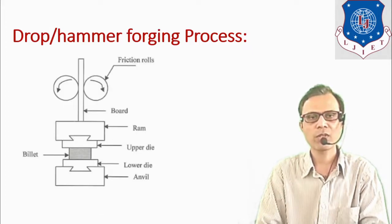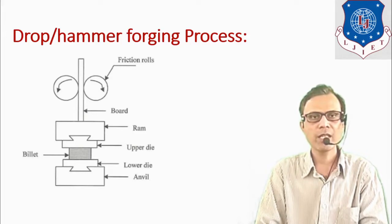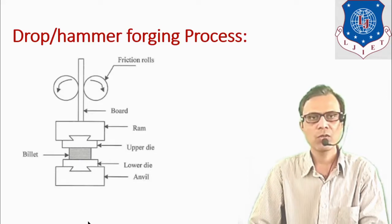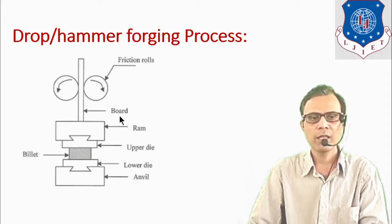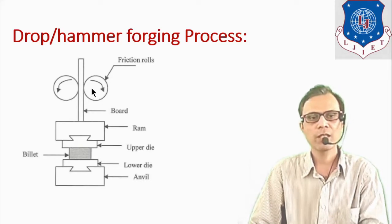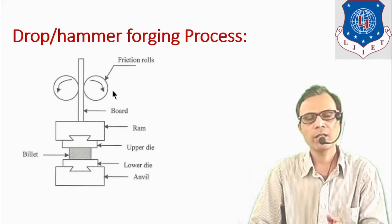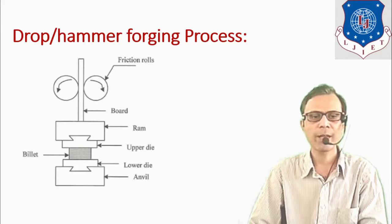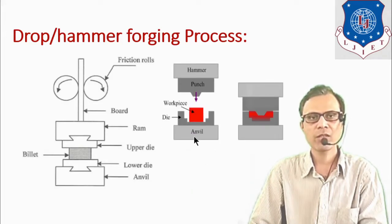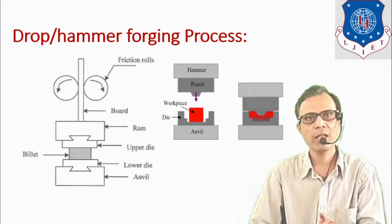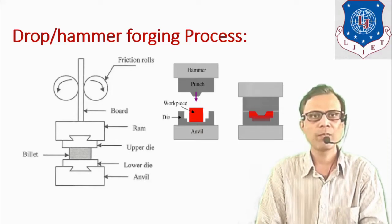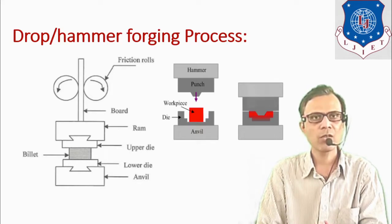Now let's see the drop forging or hammer forging process. A simple mechanism is shown here, known as the gravity hammer or board hammer. It consists of two parts of the die: upper die and lower die. The workpiece is placed between them and the hammer blow is given by friction rolls which rotate continuously, providing reciprocating movement to the ram. The lower die always remains fixed with the anvil, which is very heavy in construction so it can withstand the forces produced by the successive blows.